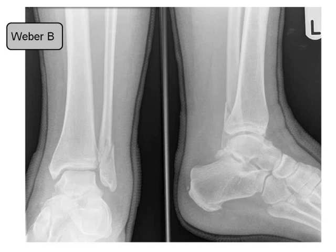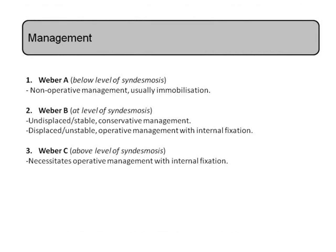Would it be safe to say that we can classify our management or treatment of each of these A, B, C fractures according to their location? Very much so. A Weber A, below the level of the syndesmosis, is almost never treated operatively. Some may be put into a cast, some may not even require cast immobilization, but certainly wouldn't be expected to require surgery.